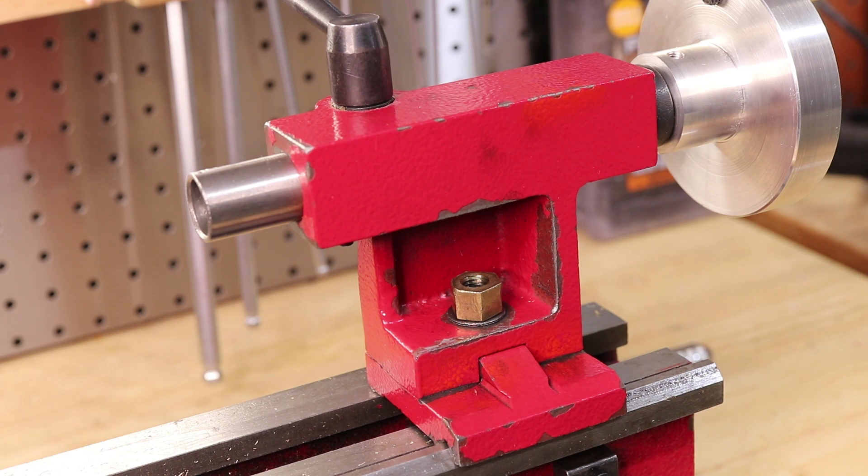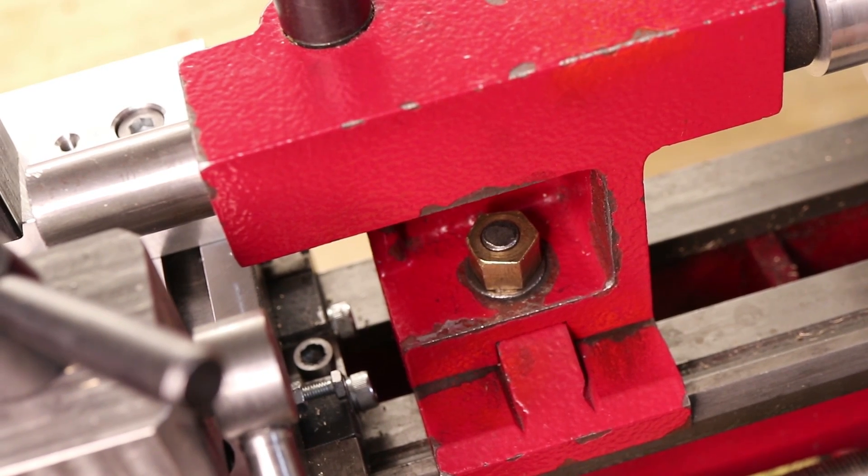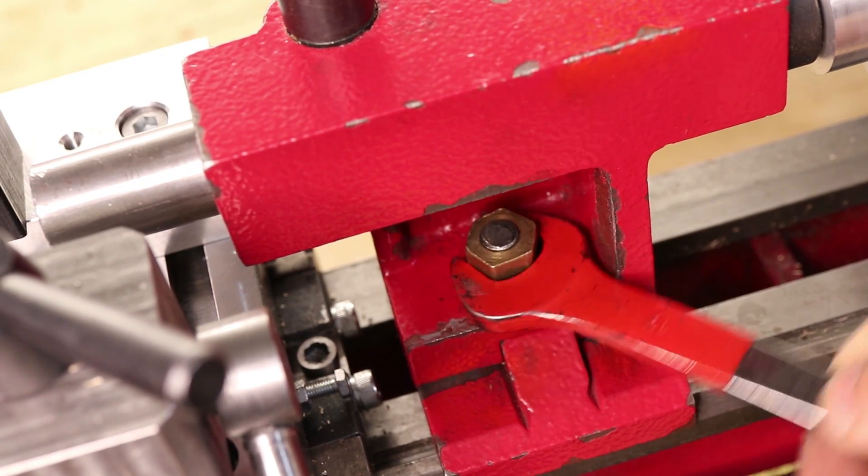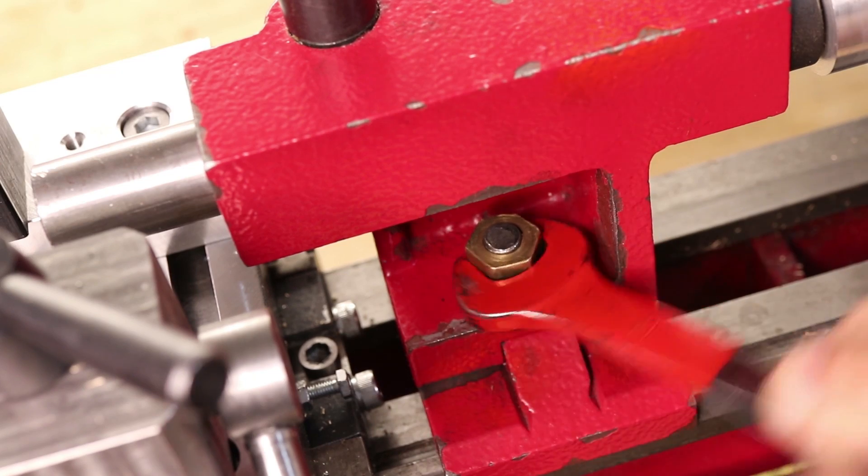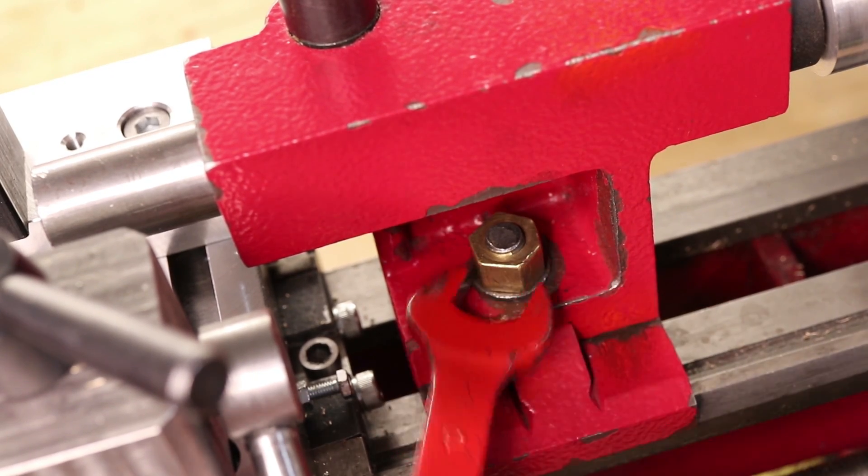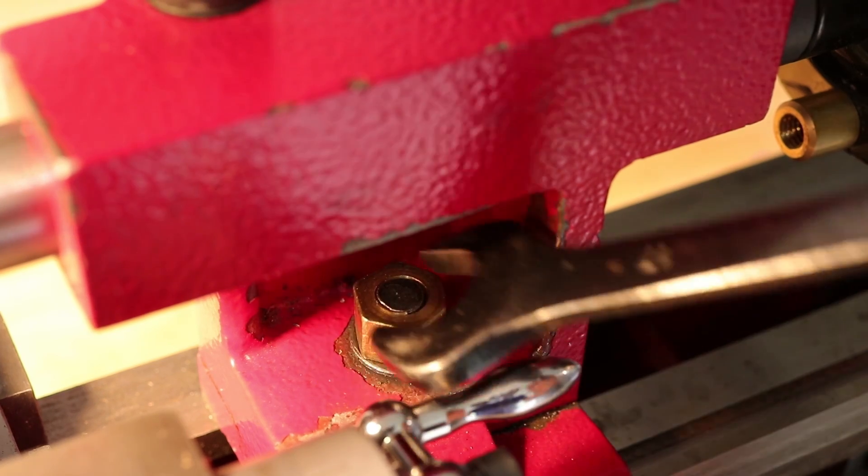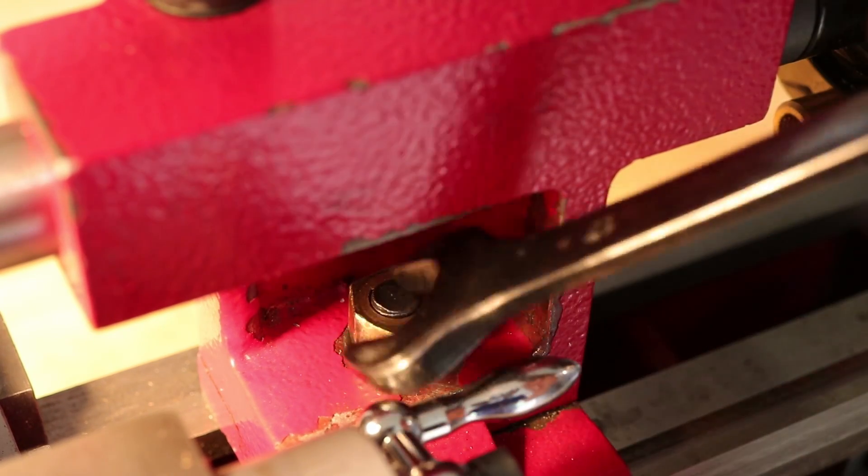One thing that is very overdue for an upgrade though is the tailstock locking mechanism. It doesn't apply to all mini lathes, but most Sieg models come with a nut that you tighten with a wrench to lock the tailstock in place. Now this design is not exclusive to mini lathes, I've encountered it on some much larger lathes.